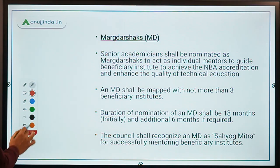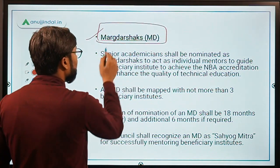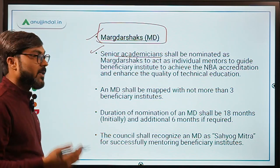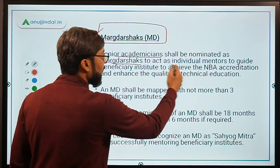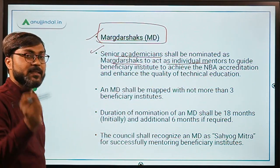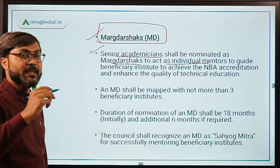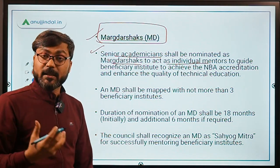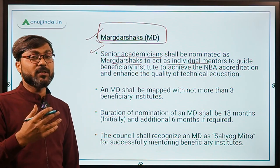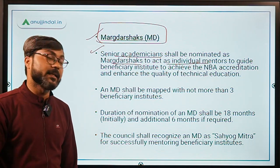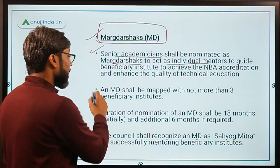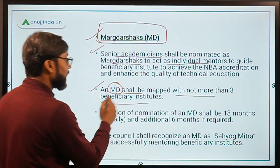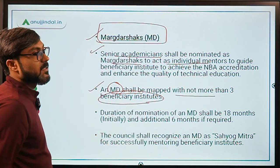The second component is called the Marg Darshak. These are senior academic mentors who will be nominated as Marg Darshak to act as individual mentors to guide institutions. They will help improve technical education in their institutes and help them obtain NBA accreditation. A Marg Darshak shall be mapped with not more than three beneficiary institutes.